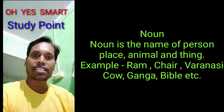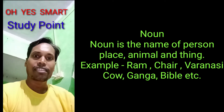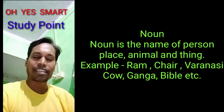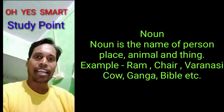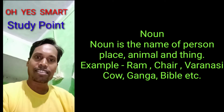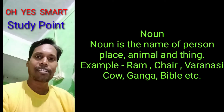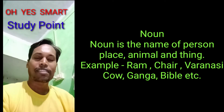First we will discuss about noun. Noun is the name of a place, person, animal, or thing. For example, Ram is the name of a person, chair is a thing, and Parasi is the name of a place, and cow is an animal.